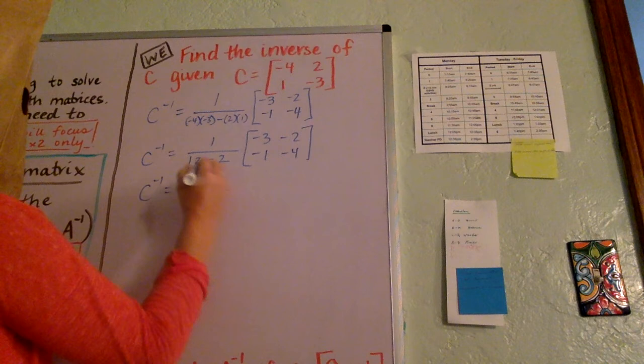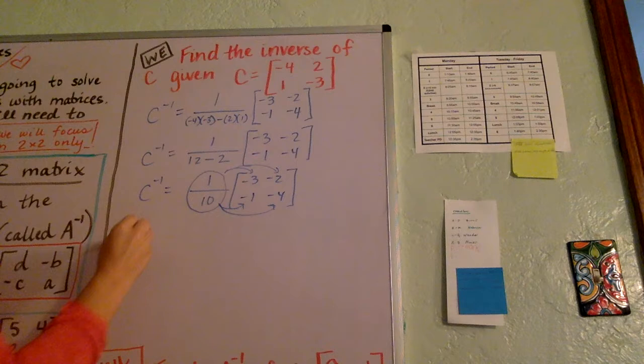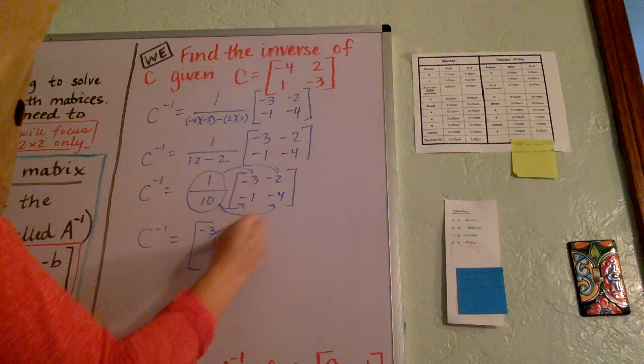And now we're going to take this 1 tenth and distribute it. In other words, we're going to put a 10 underneath each of these terms, and so we're going to get C inverse is negative 3 tenths, negative 2 tenths, negative 1 tenths, and negative 4 tenths.